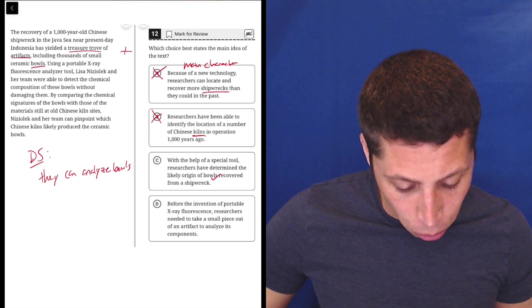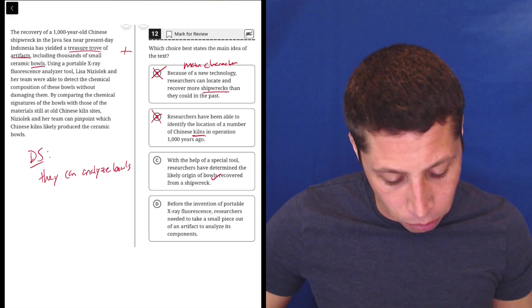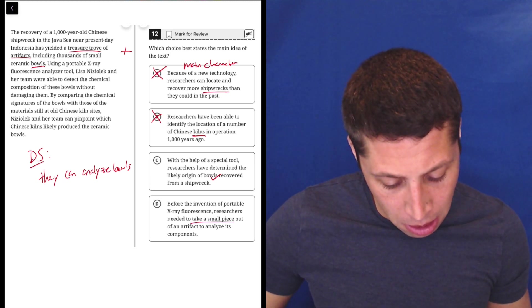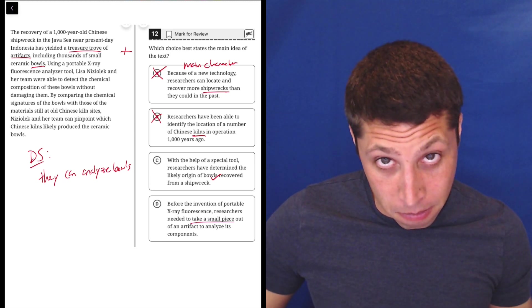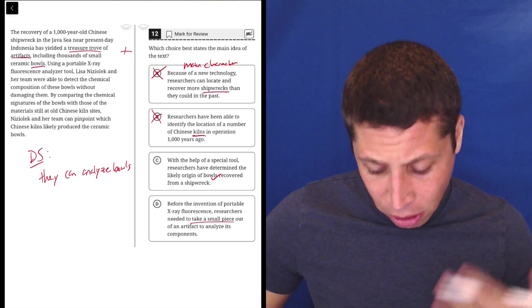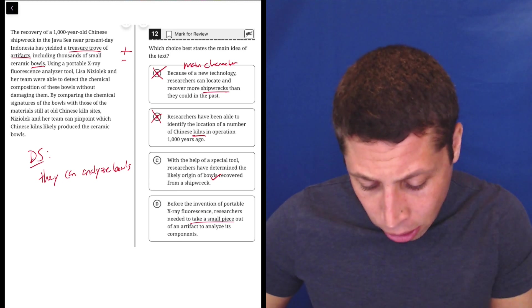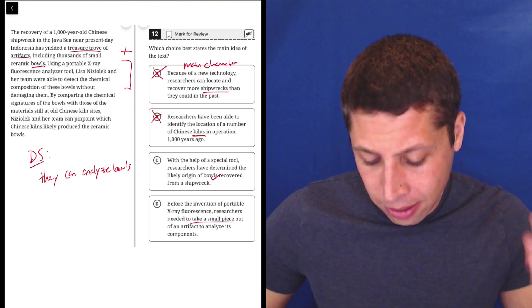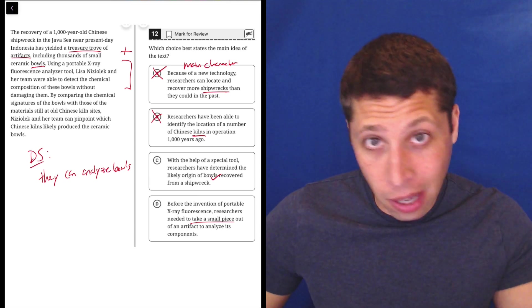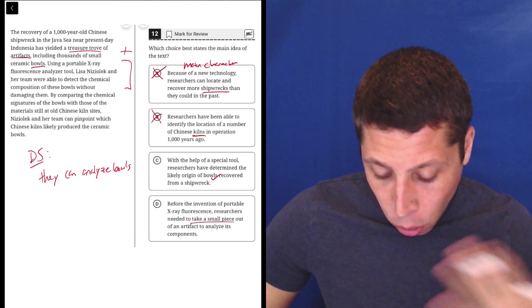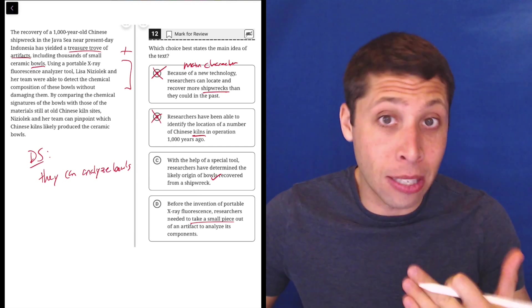Before the invention of portable x-ray fluorescence, researchers needed to take a small piece out of an artifact to analyze its components. I don't know, right? I mean, does it talk about what happened before? No, it talks about them using it, but it doesn't say like they used it because the old way was bad. The old way doesn't really come up at all. So maybe this is true.